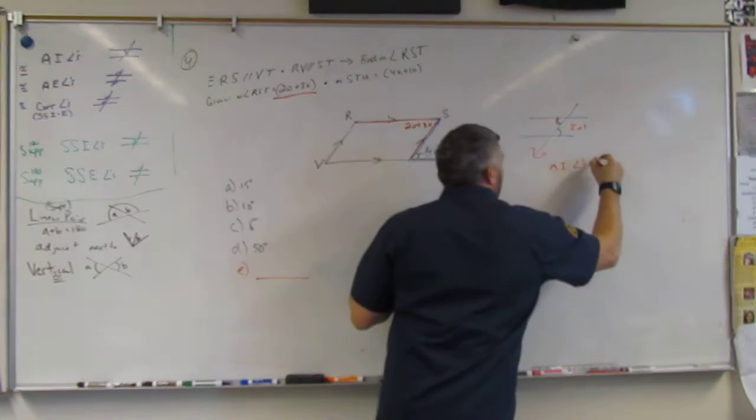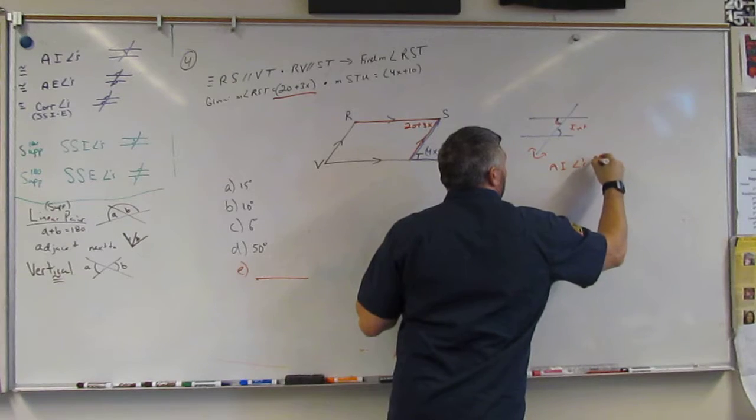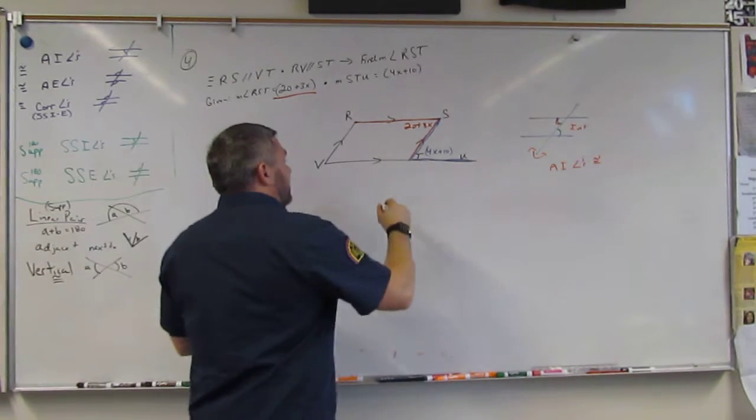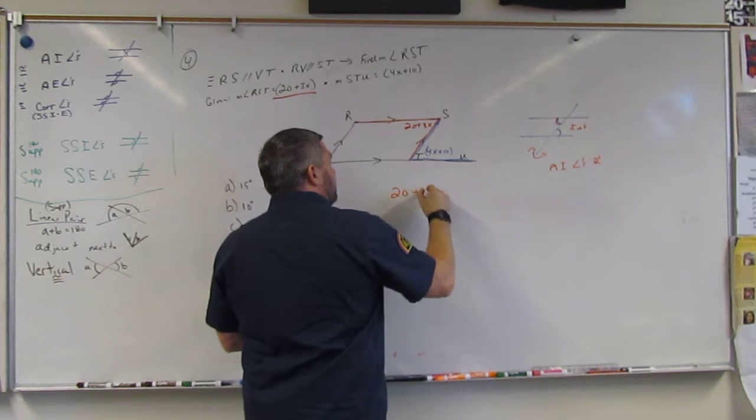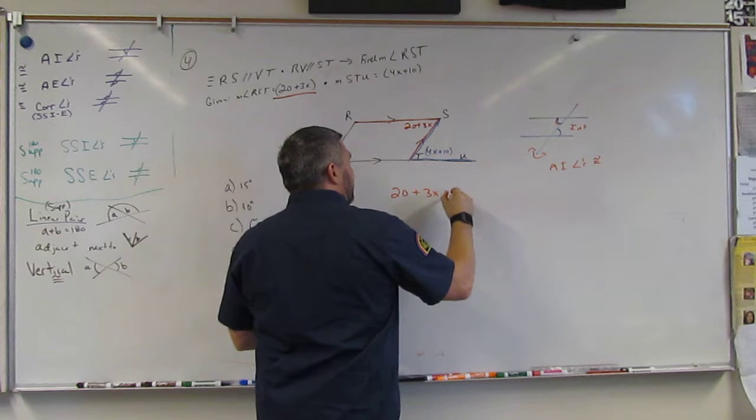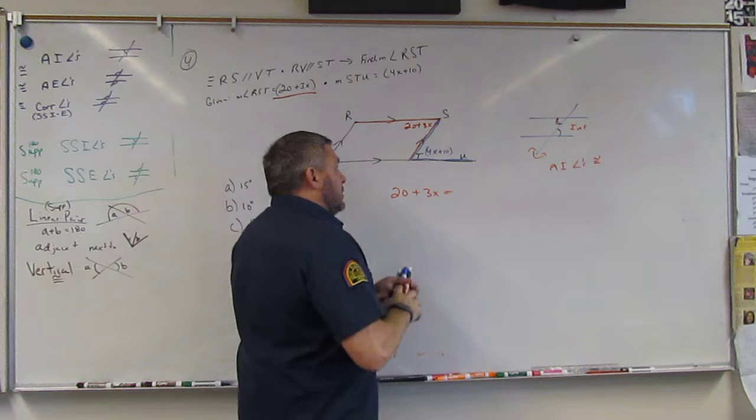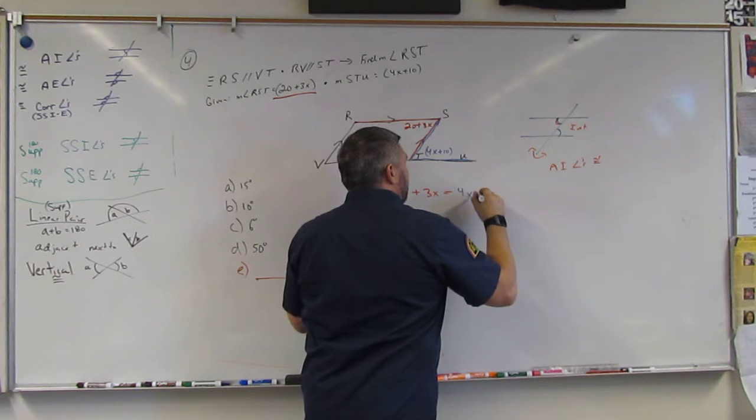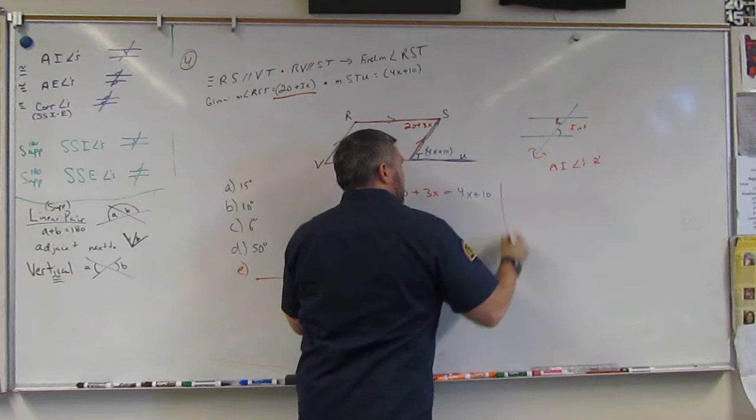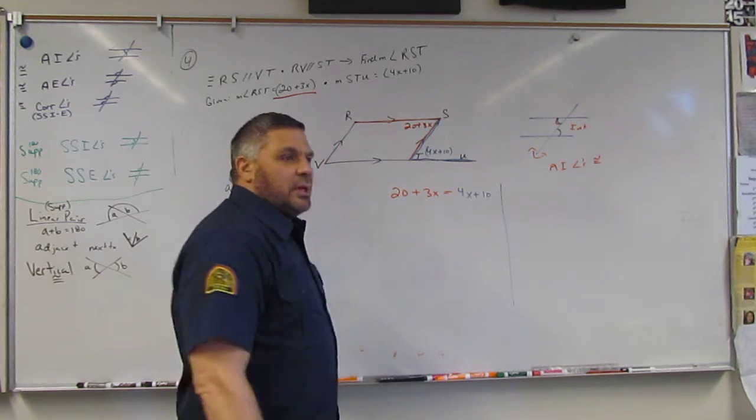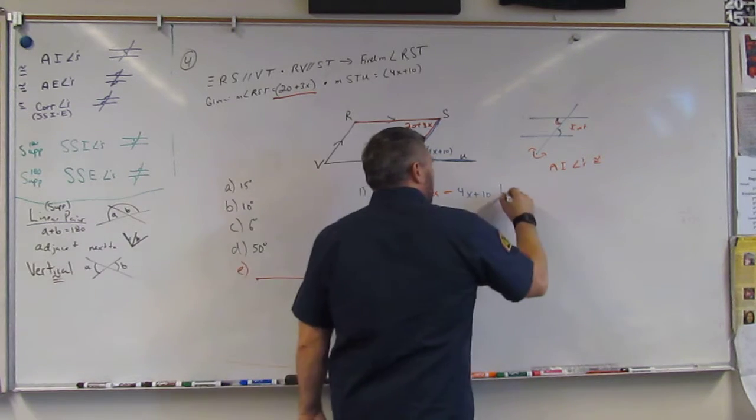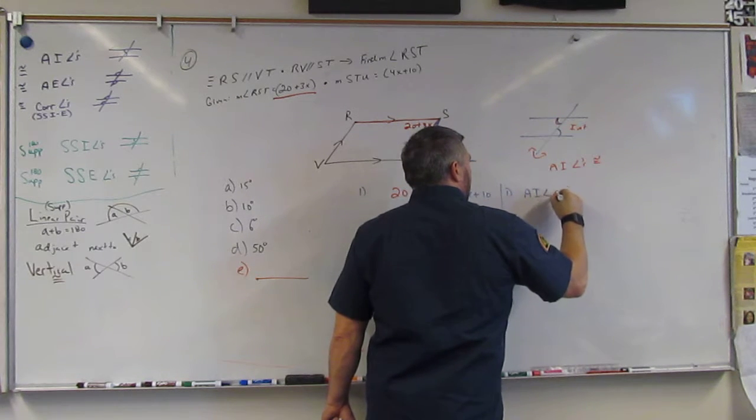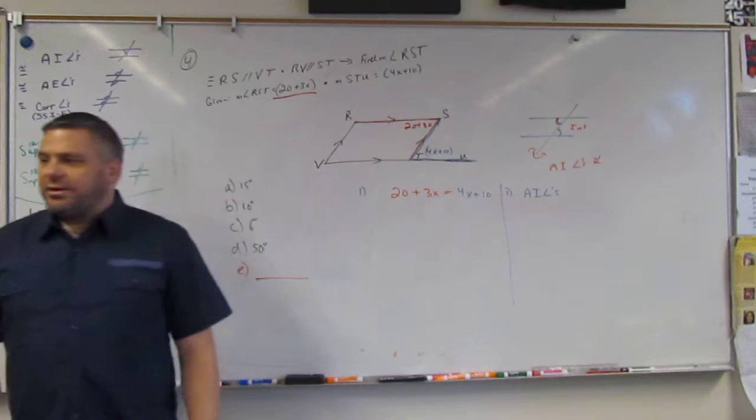We know that these are congruent. So what that means is 20 plus 3x is congruent or equal to 4x plus 10. Why? Alternating interior angles.